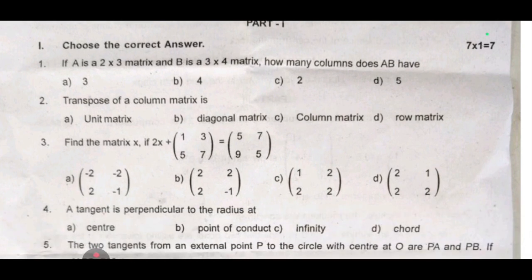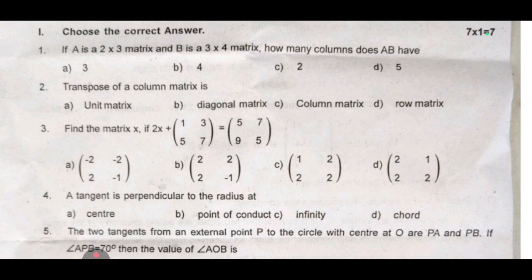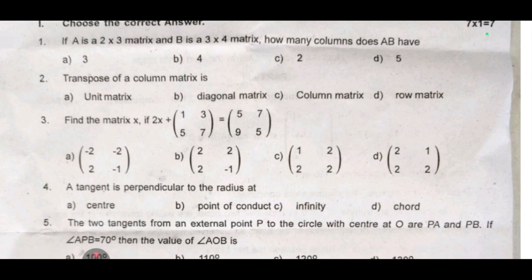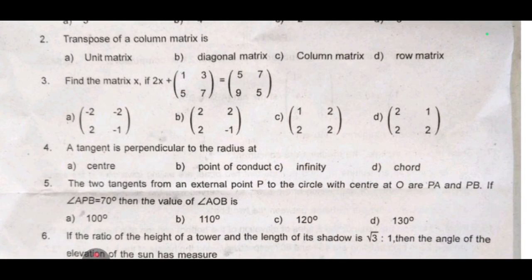Choose the first one: if A is a 2 into 3 matrix and B is a 3 into 4 matrix, how many columns does AB have? Second one: transpose of a column matrix is dash. Third one: find the matrix if 2x plus 1.